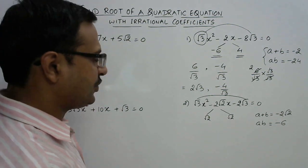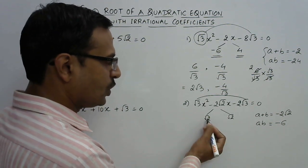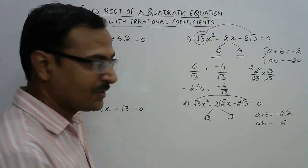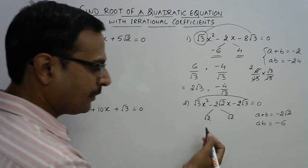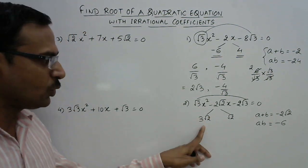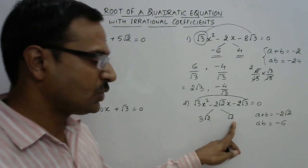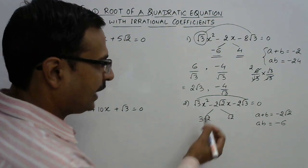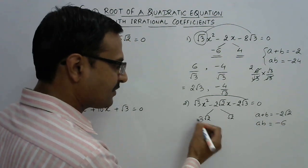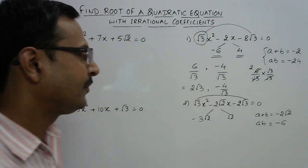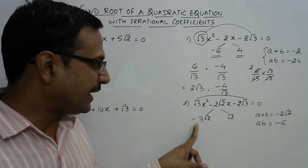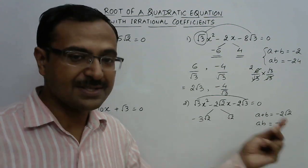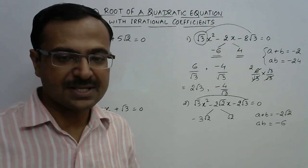What should be the coefficients? Since √2 × √2 = 2, we need a factor of 3 so that 3 × 2 = 6. So the two factors become 3√2 and √2. For the sign, the sum must be -2√2, so the larger one is negative: -3√2 + √2 = -2√2 and their product is -6. Step one is done.